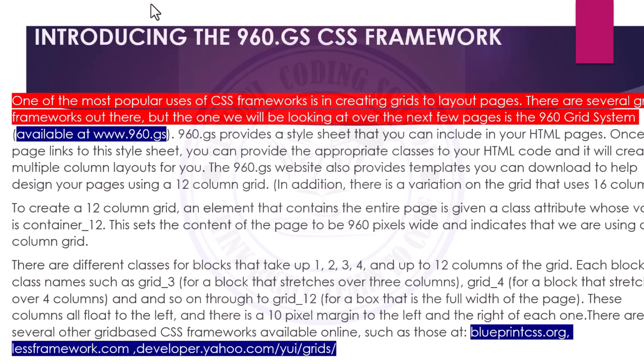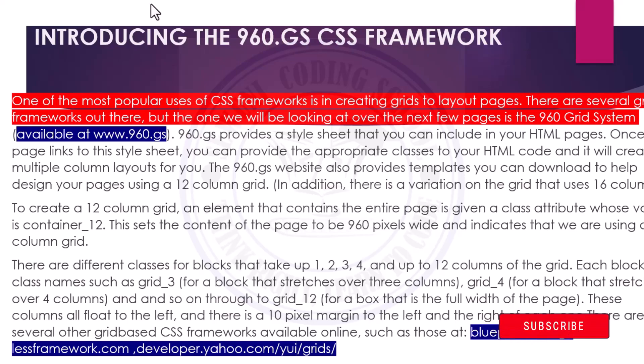Once your page links to this stylesheet, you can apply the appropriate classes to your HTML code to create multiple column layouts. The 960.gs website also provides templates you can download to help design your pages using a 12-column grid. You can decide whether to put four, four, and four to get three columns, or use individual columns, or three plus three plus three plus three to get four columns, or six and six blocks.